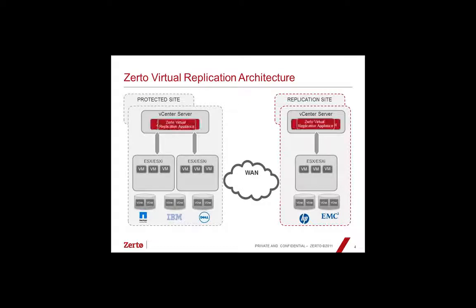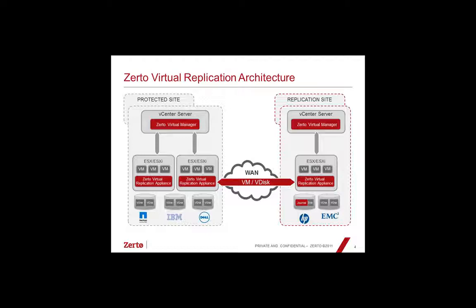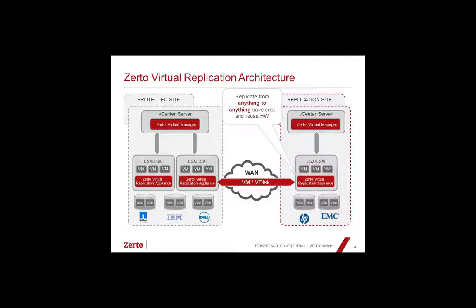Let me run through a very simple architecture. Here we have two sites, though we are able to protect multiple sites. There are two components of the software: the Zerto Virtual Manager and the Zerto Virtual Replication Appliance. The Zerto Virtual Manager plugs right into vCenter Server — it's just an additional tab, and Shannon will show you that in the demo. The Zerto Virtual Replication Appliance is a very lightweight piece of software that installs on each ESX host within the environment — on a per-ESX-host basis, not per VM. That's what does the replication.